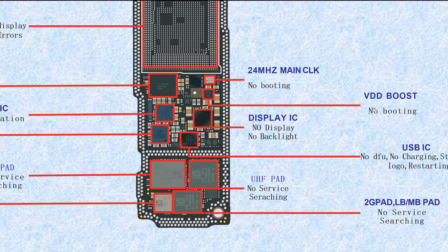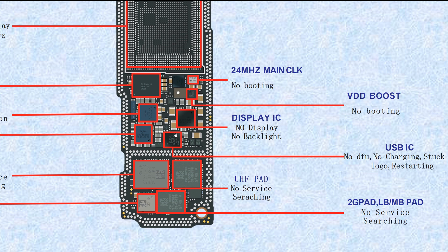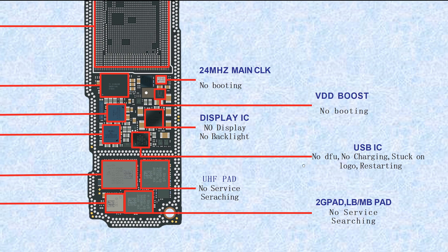This one is the VDD boot IC. If broken, it causes no booting. This display IC — if broken, it causes no display, no backlight. This USB IC — if broken, it causes no DFU, no charging, stuck on logo, or restarting.